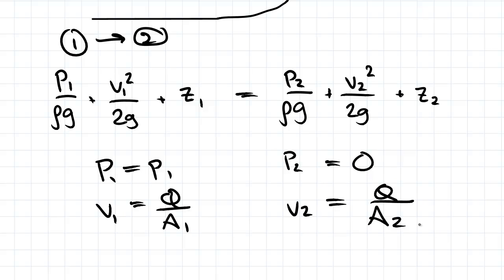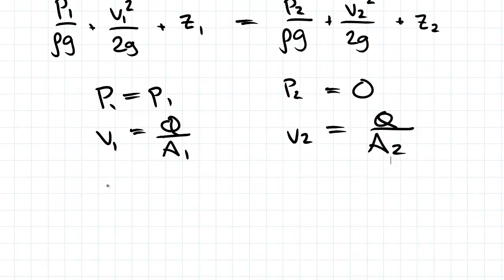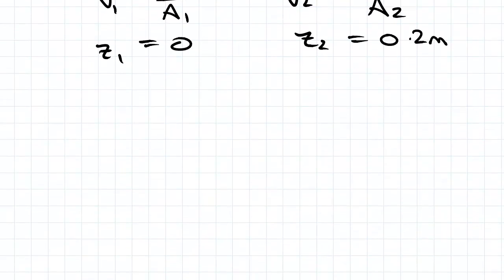And for Z we have Z equals zero because we defined our center line at the datum at the center line. And for 0.2 it would be 0.2 meters above the center line. So that's Z1 equals zero, Z2 equals 0.2 meters. So let's solve for our two Vs. We need to find A1 and A2. A1 we said the diameter was 10.